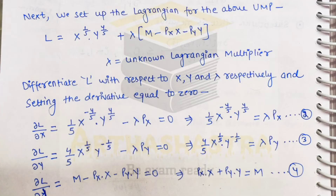Our next step is to differentiate the Lagrangian function with respect to the variables. In this problem we have three variables: x, y, and lambda. To find the first order conditions of the maximization problem, we partially differentiate the Lagrangian function with respect to these variables and set each derivative equal to zero. So we have the partial derivative of L with respect to x — written as ∂L/∂x because it is partial differentiation.